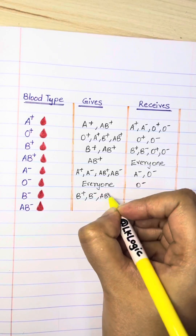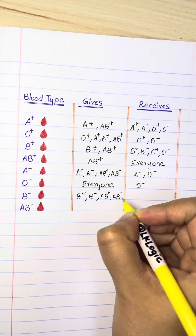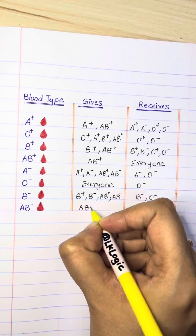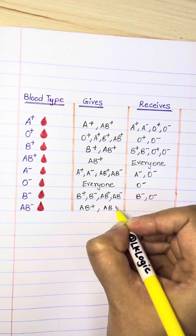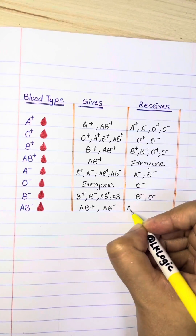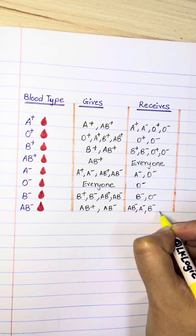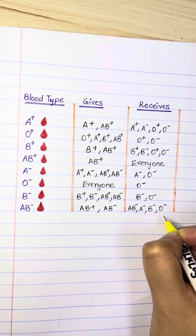B negative can give to B positive, B negative, AB positive, and AB negative, and can receive from B negative and O negative. AB negative can give to AB positive and AB negative, and can receive from AB negative, A negative, B negative, and O negative.